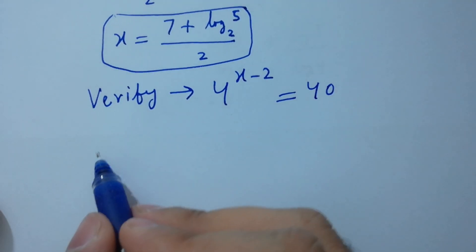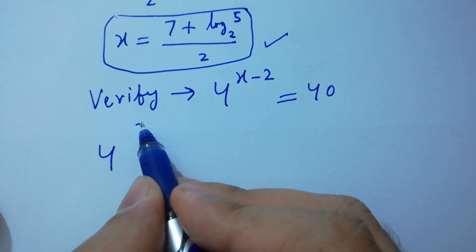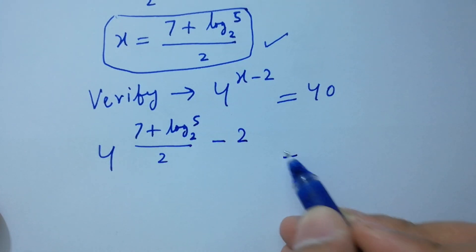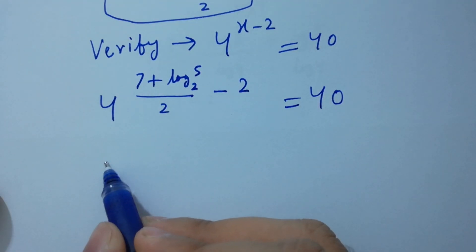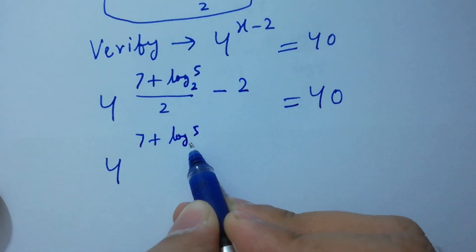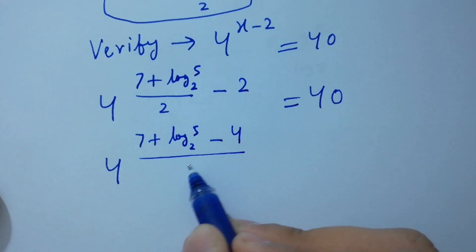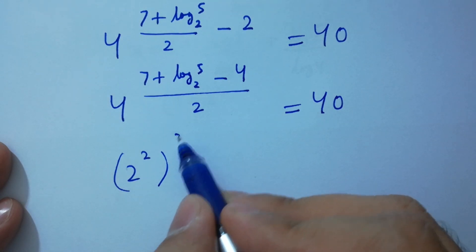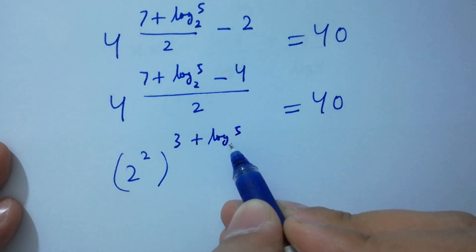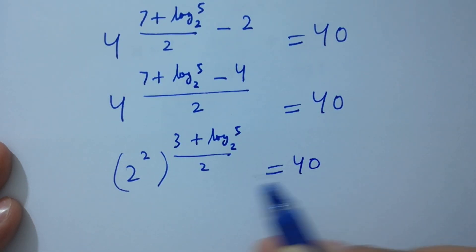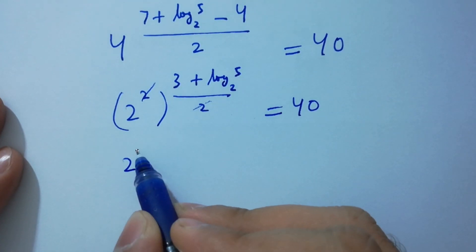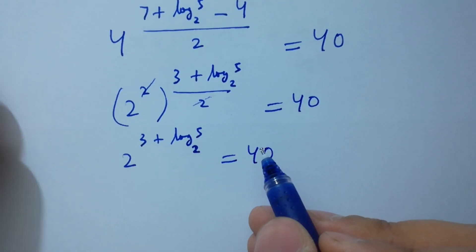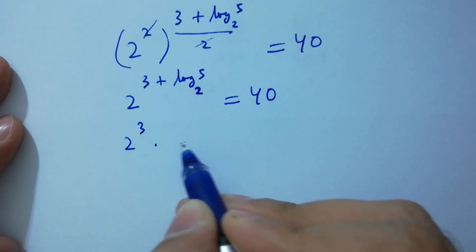Now verify: 4 to the power x minus 2 equals 40. With x equals (7 + log 5 to the base 2) over 2, we compute 4 to the power (7 + log 5 to the base 2) over 2 minus 2 equals 40. Since 4 equals 2 squared, this becomes 2 to the power (7 + log 5 to the base 2 minus 4) over 2, which simplifies to 2 to the power (3 + log 5 to the base 2) over 2.